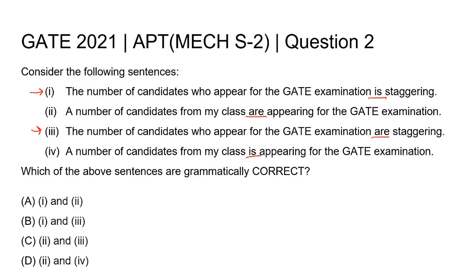The use of the verb 'is' or 'are' depends on the subject of the sentence. If the subject is plural, then we use 'are', and if the subject is singular, then we use 'is'. In the first and third sentences, the subject of the sentence is 'the number', which is a singular subject.